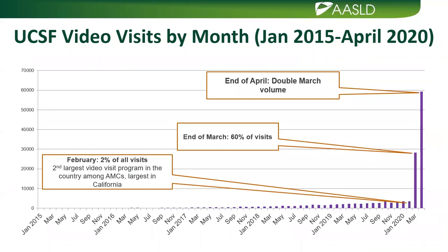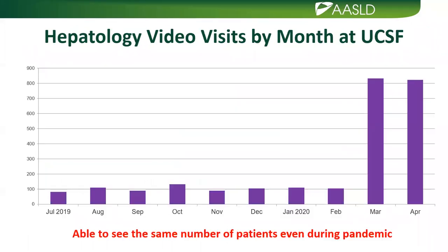UCSF video visit data from 2015 to April 2020 shows that only 2% of all visits before COVID-19 were video visits. In one week, how we practice medicine changed for all of us — now 60-70% of all UCSF visits are done through video, with 60,000 visits in April alone. In our UCSF hepatology practice, there were about 800 video visits in March and April, allowing us to continue providing care. We did not see a significant drop in patient numbers compared to before COVID-19.